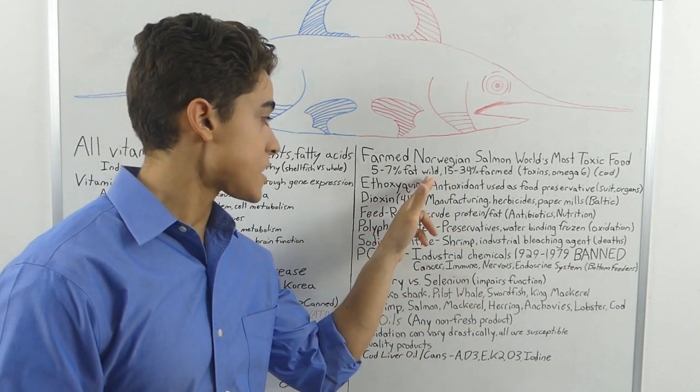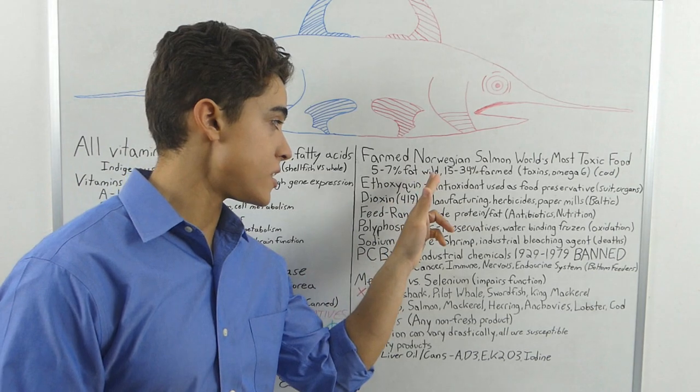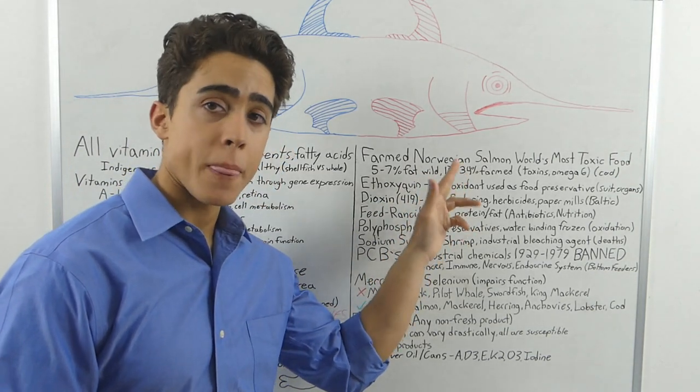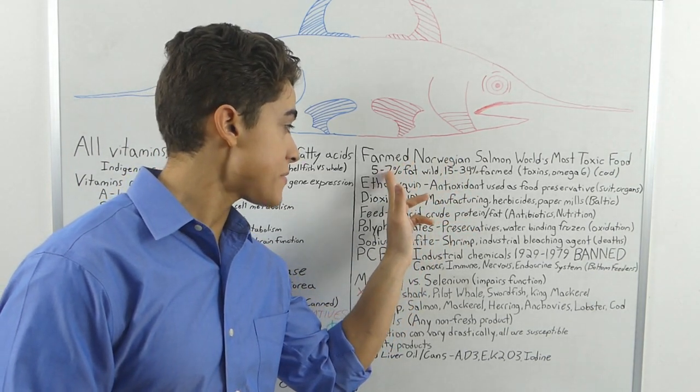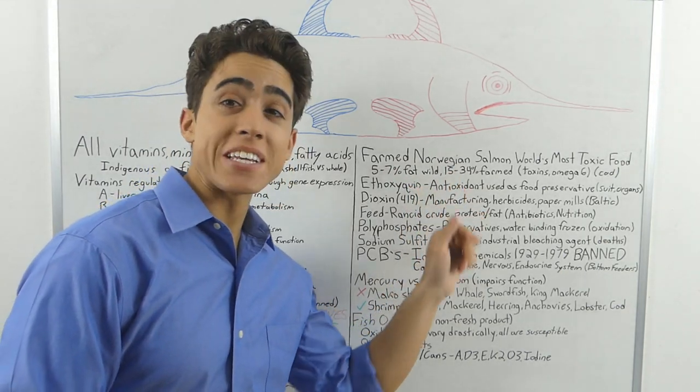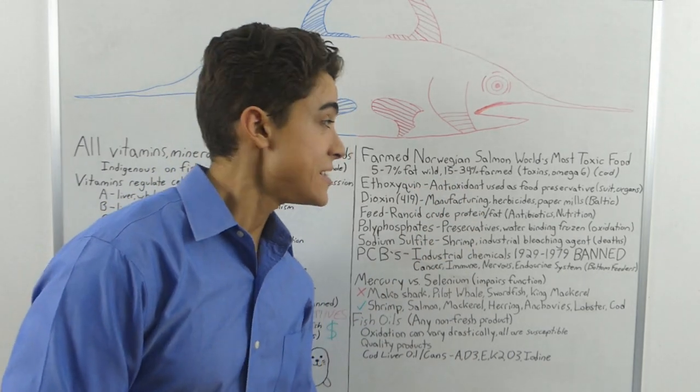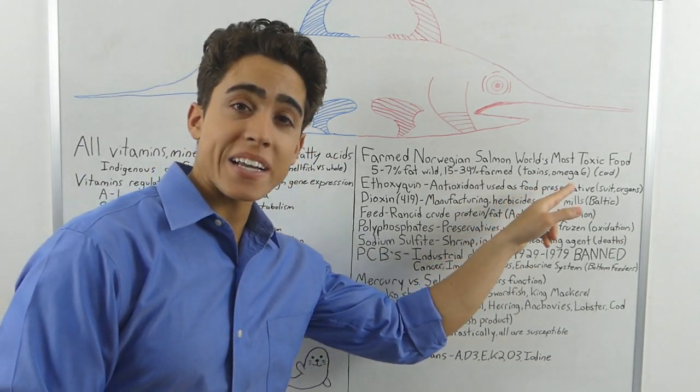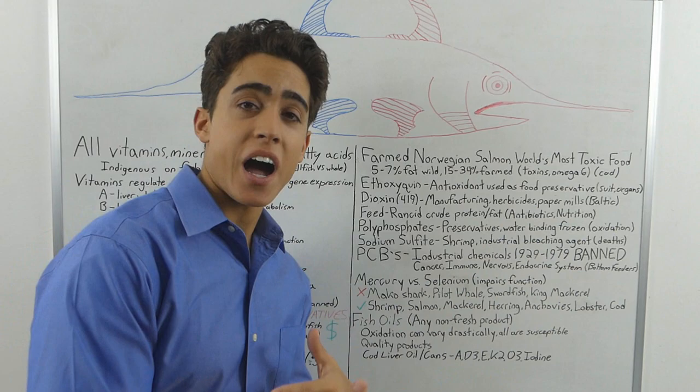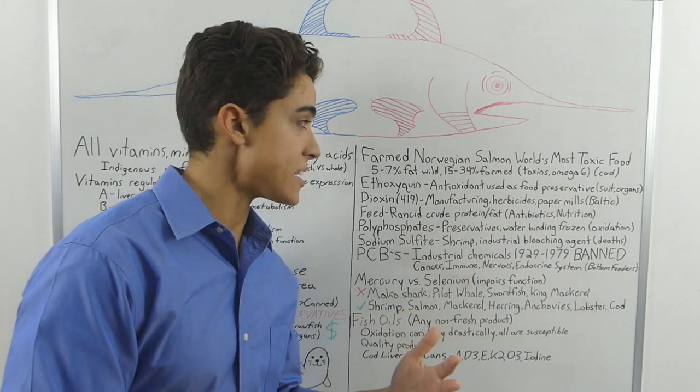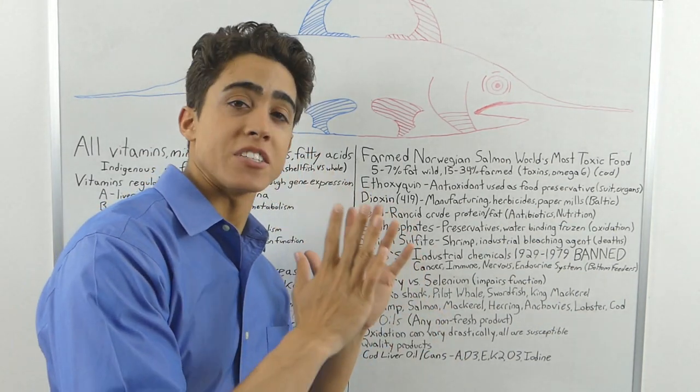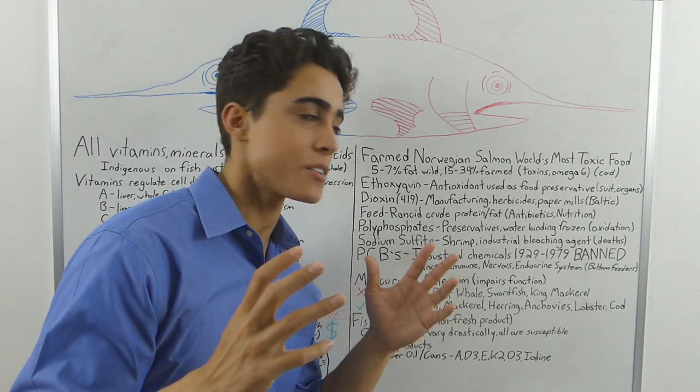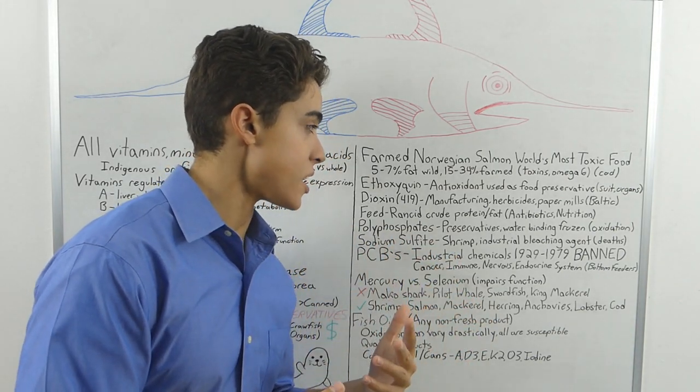In this documentary, they compared the fat content of wild salmon to farmed salmon. Wild salmon had 5% to 7% fat, and farmed salmon had 15% to 34% fat. The issue with this is fat is where they store the toxins and omega-6 if the feed has a high ratio of omega-6 fatty acids. So you have this super toxic, unnatural fat content fish. It's completely nuts.